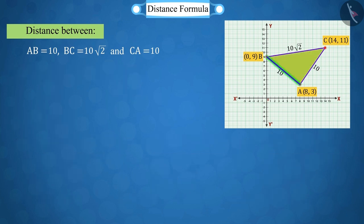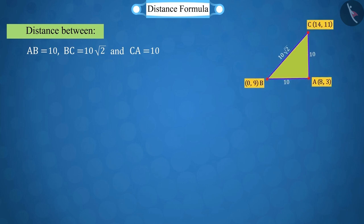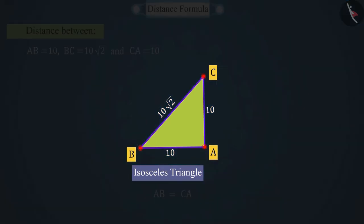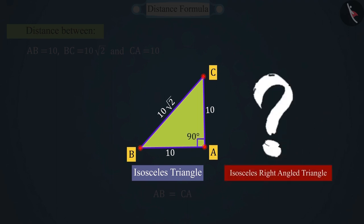If you look carefully, we get the values AB and CA as equal, which satisfies the condition of an isosceles triangle. But, we have to check for an isosceles right-angled triangle. Can you tell how we can check if it is an isosceles right-angled triangle?